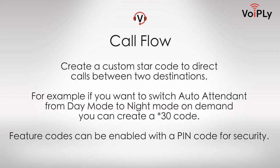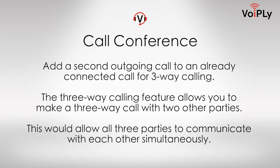Call Flow: Create a custom star code to direct calls between two destinations. For example, if you want to switch auto attendant from day mode to night mode on demand, you can create a star 30 code. Feature codes can be enabled with a PIN code for security. Call Conference: Add a second outgoing call to an already connected call for three-way calling, allowing all three parties to communicate with each other simultaneously.